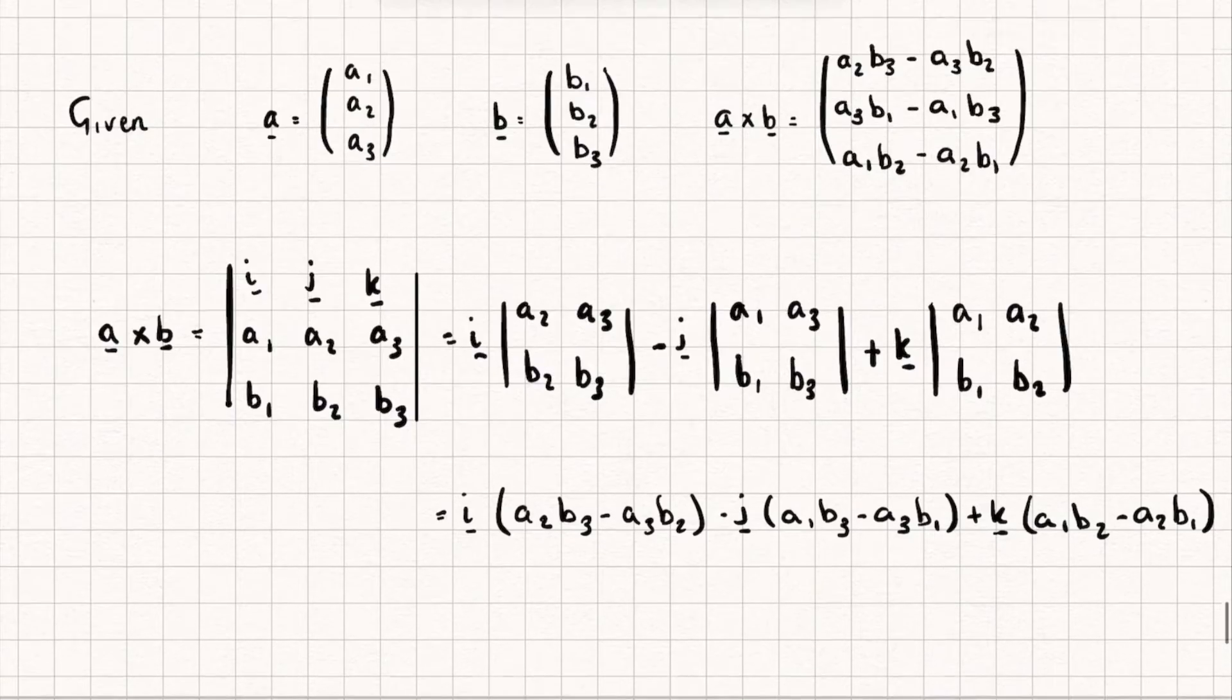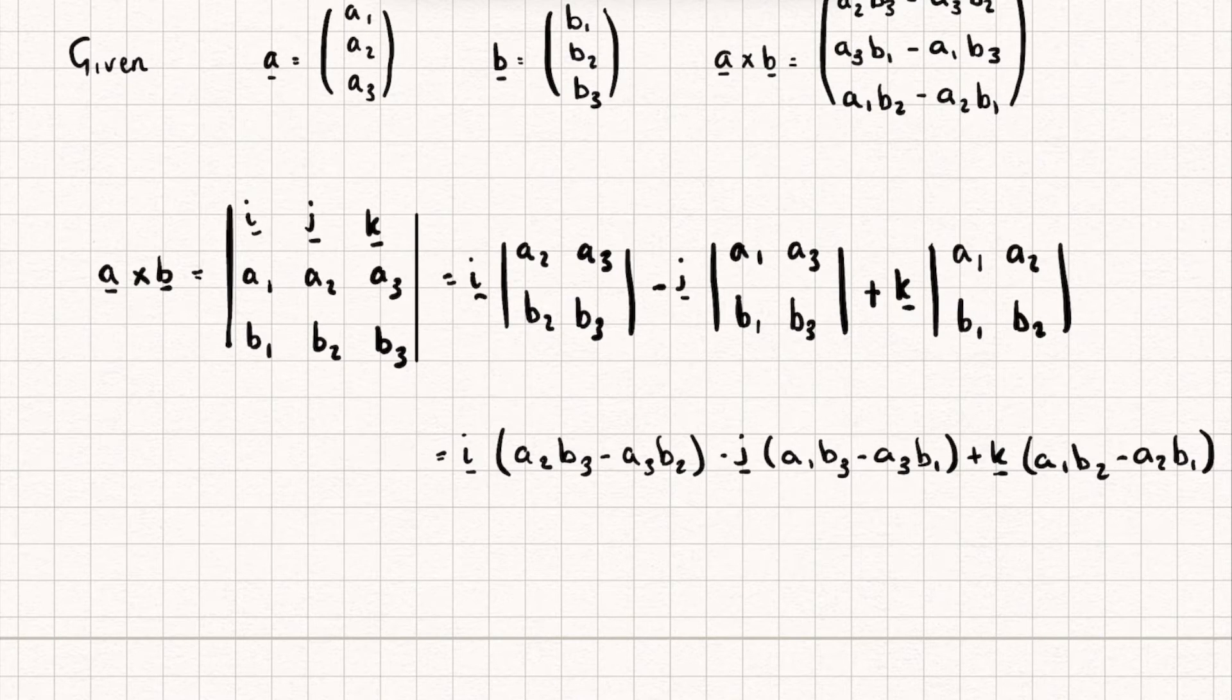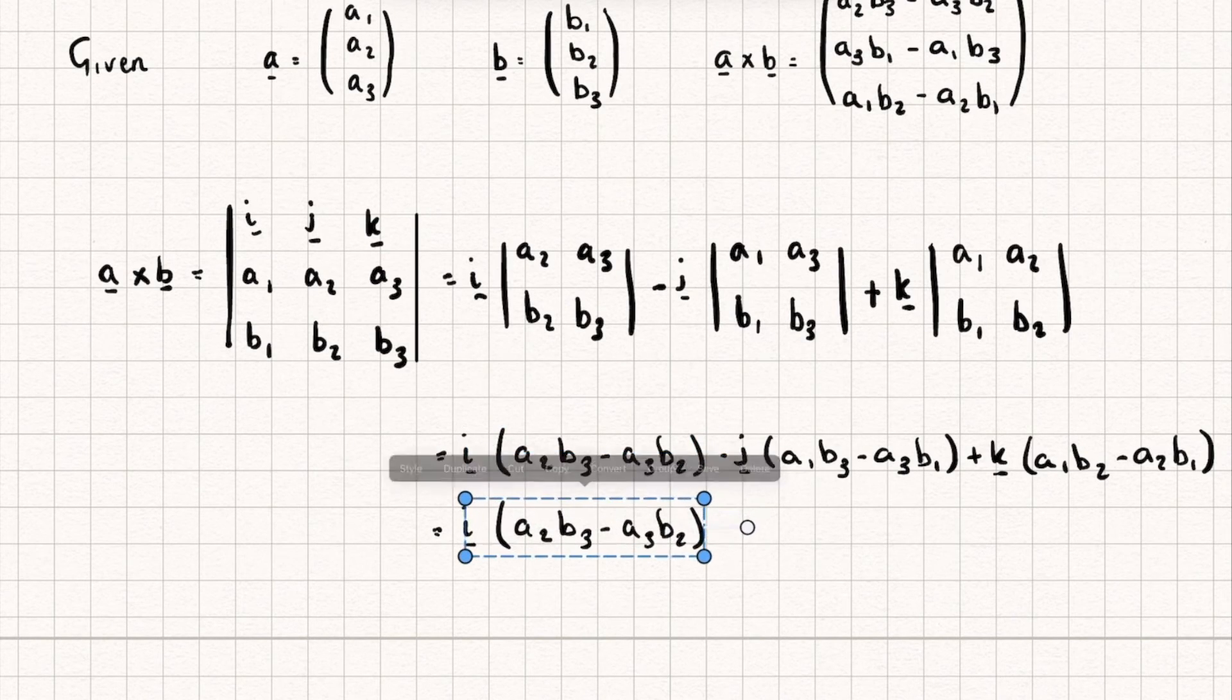Okay, now what I'm going to do is actually distribute this negative inside this bracket, because then it will make it look a lot more like the original thing we're used to. So this is going to stay the exact same, so I'll just copy that down.